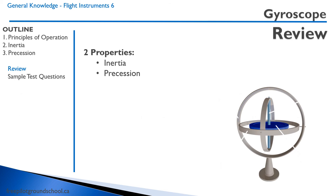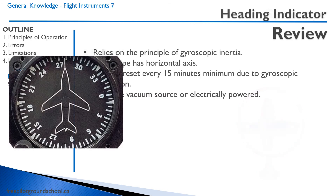The gyroscope has two properties: gyroscopic inertia and gyroscopic precession. The heading indicator relies on the principle of gyroscopic inertia — the gyroscope remains in place while the aircraft turns around it. The gyroscope is on a horizontal axis, and it must be reset every 15 minutes at a minimum, due to gyroscopic precession.